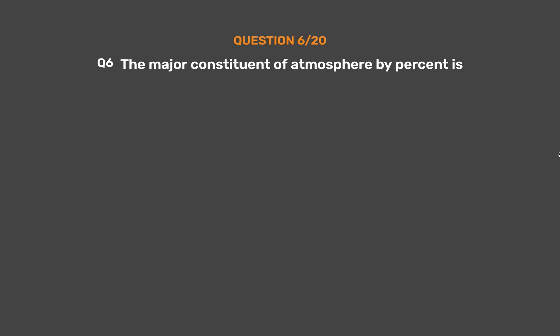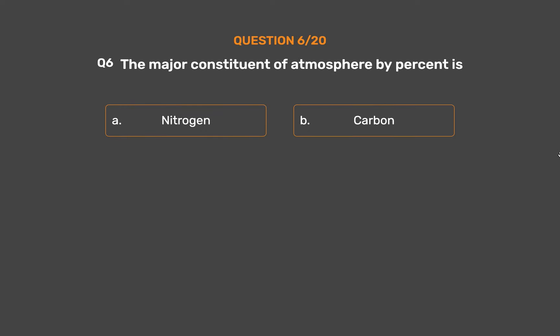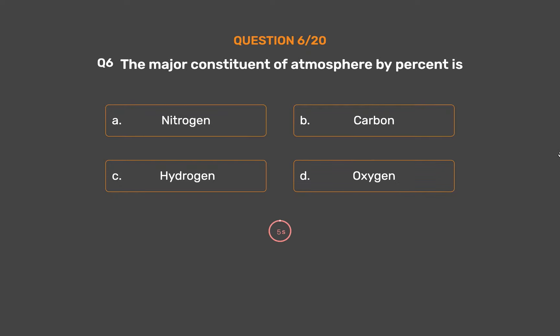Question Number 6. The major constituent of atmosphere by percent is — Option A: Nitrogen. Option B: Carbon. Option C: Hydrogen. Option D: Oxygen.